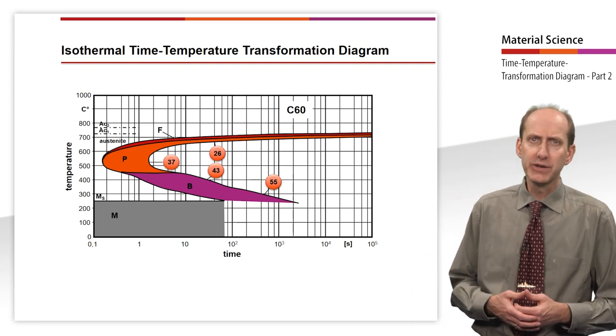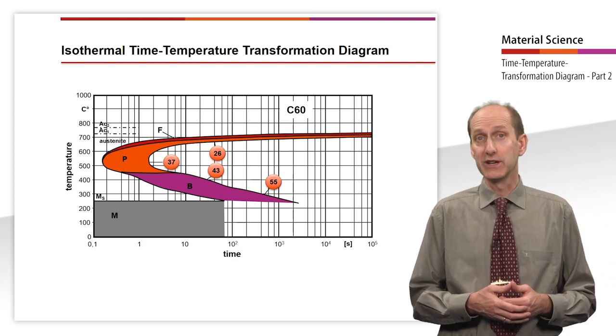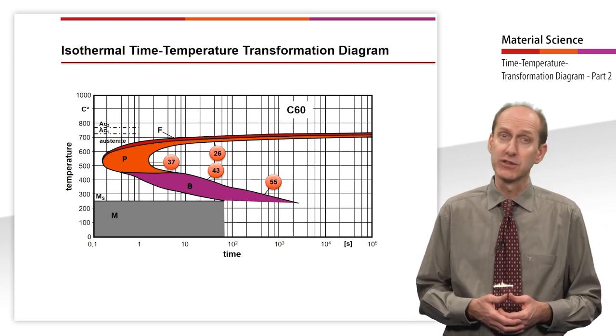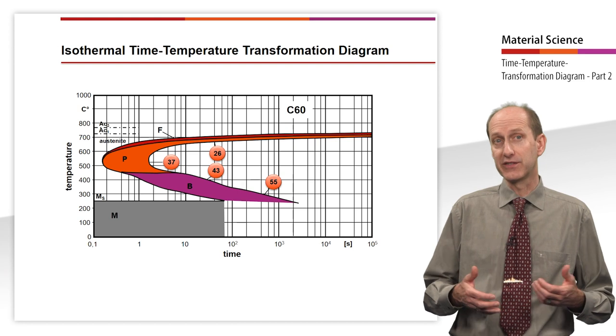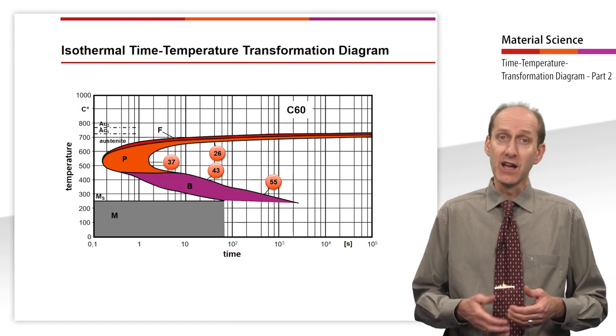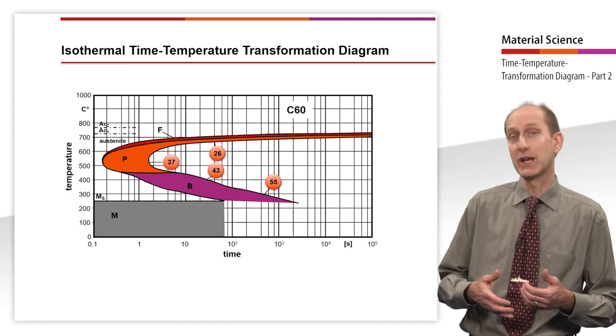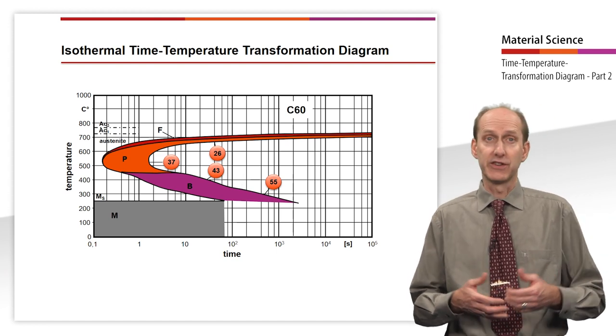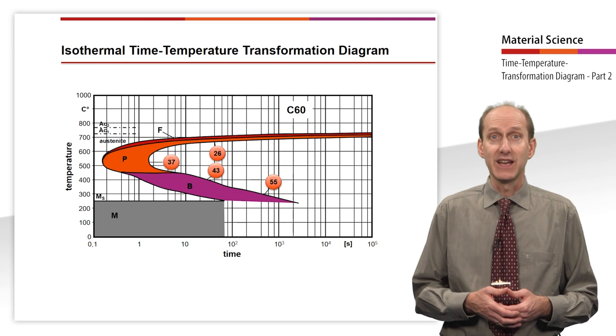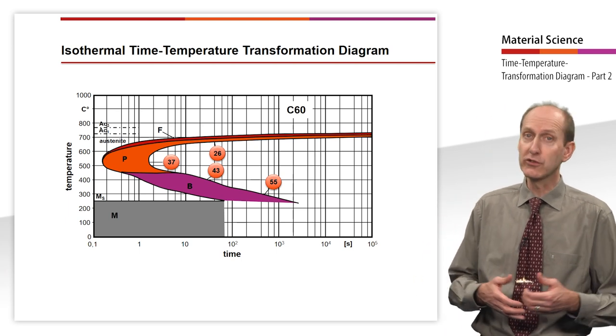Here, the work pieces are first cooled in a heated salt or lead bath to just above the martensite line MS and then held isothermally, at the same temperature. Once the bainite transformation has taken place, cooling is continued.